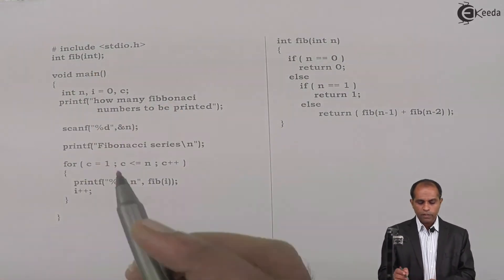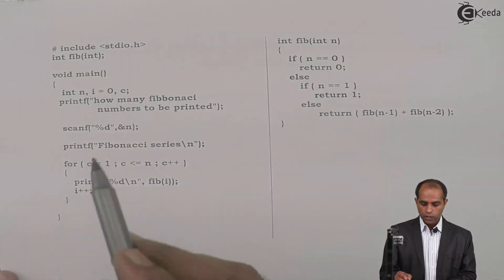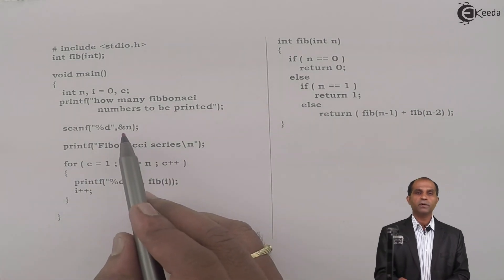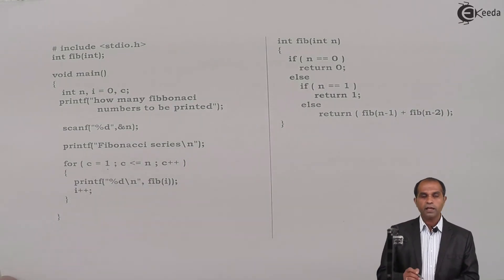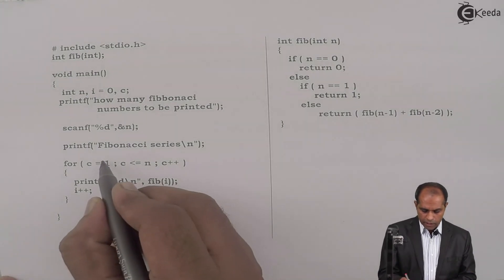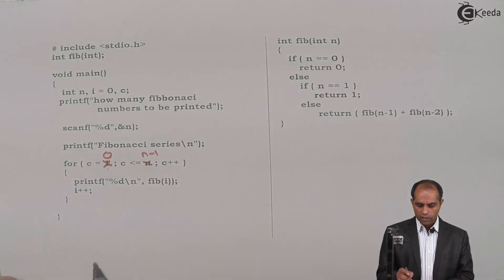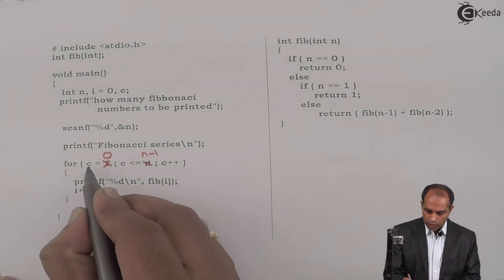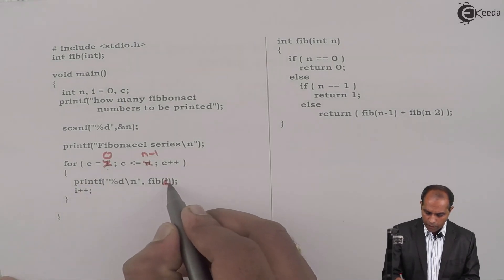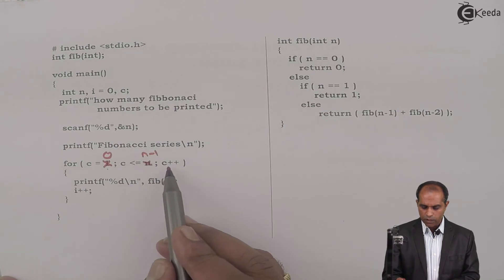You'll have this particular Fibonacci function, Fib of int. I'll ask the user how many Fibonacci numbers to be printed. The user says he needs to print five Fibonacci numbers. So first time is 1, second time till n. You can take this as 0 and this as n minus 1. You can set the count as 0 and n minus 1. When i is 0, this is c. This has to be Fib of c. Your variable c has been set to 0.